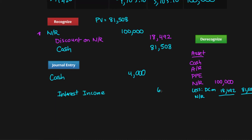Instead of amortizing the discount through the note receivable account, we're going to amortize it using the contra asset account. So we're going to be debiting discount on note receivable, and that's just going to be the difference between six thousand five hundred and twenty and four thousand, which is twenty-five twenty. We'll be slowly amortizing the discount over the course span of the six years.